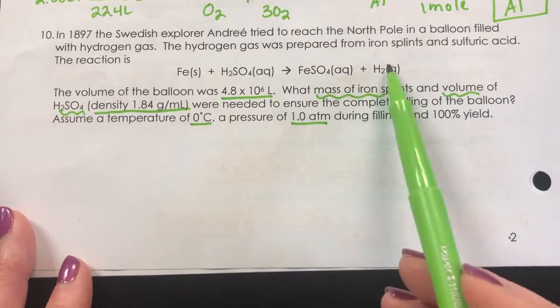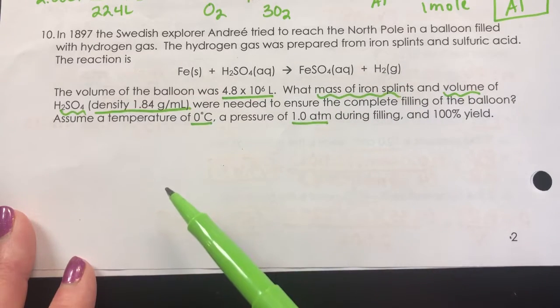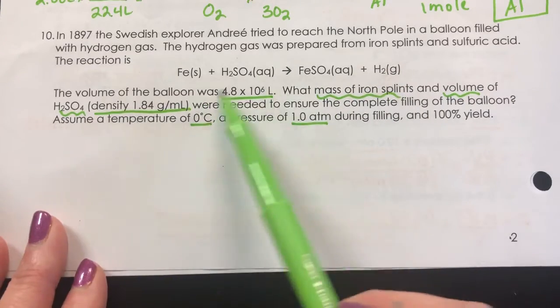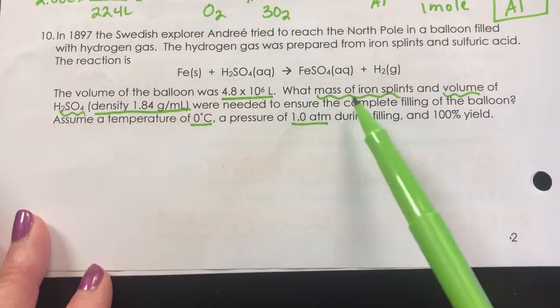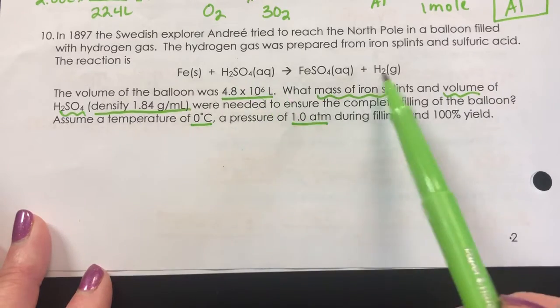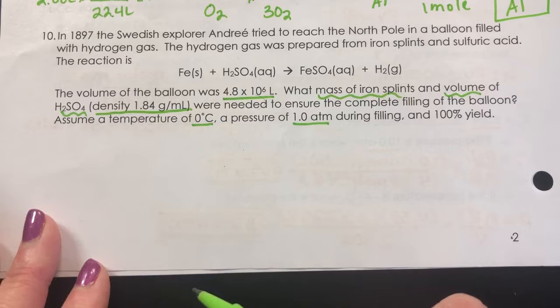Well, the only gas that fills the balloon in the reaction is the hydrogen because the iron sulfate is aqueous. So this volume is talking about the hydrogen. In order to figure out how much we need of the reactants, we need to figure out how many moles of hydrogen that would be. So the first step is to calculate the moles.